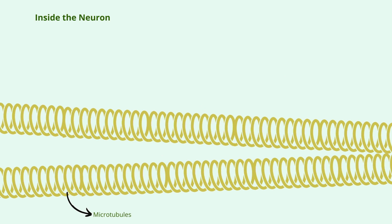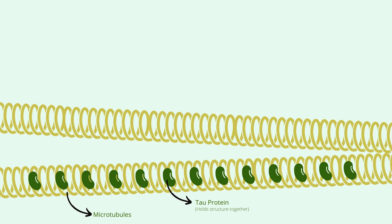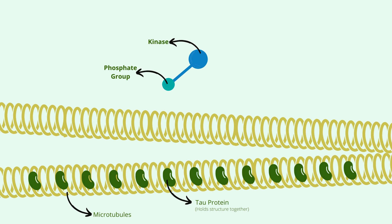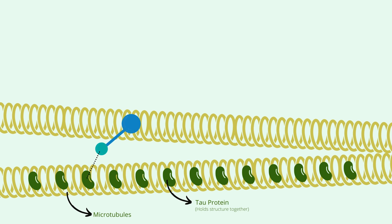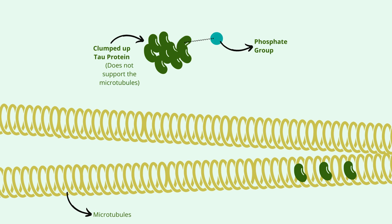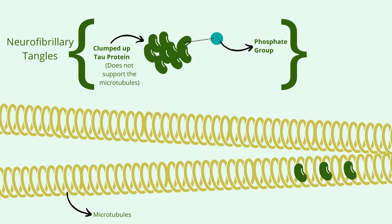Another big part of Alzheimer's disease are tangles, which are found inside the cell. Similar to other cells in the body, neurons are held together by their cytoskeleton, which is partly made up of microtubules. These tract-like structures act like passages for important nutrients and molecules along the length of the cell. A special protein called tau protein makes sure that these passages do not break apart. It is believed that the buildup of beta amyloid plaques outside the neuron initiates pathways inside the neuron that lead to the activation of kinase, an enzyme that transfers phosphate groups to the tau protein, causing it to change its shape, stop supporting the microtubules, and clump up with other tau proteins, forming neurofibrillary tangles.